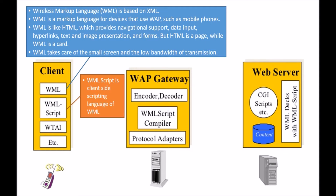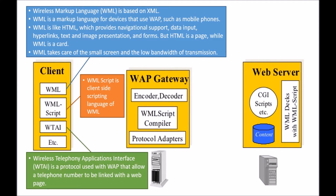The next component is WML Script, which is a client-side scripting language used with WML. The next component is WTAI — Wireless Telephony Application Interface. WTAI is a protocol used with WAP that allows a telephone number to be linked with a web page. So if you want to link a mobile phone number with a web page, you need WTAI.